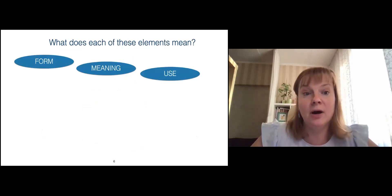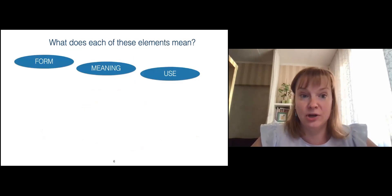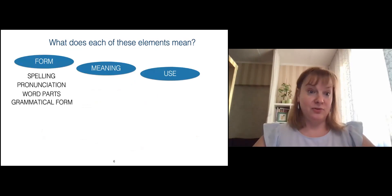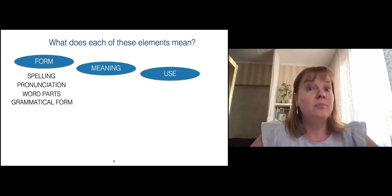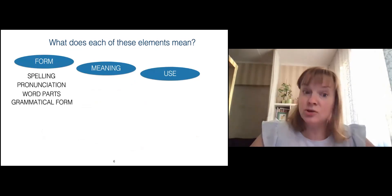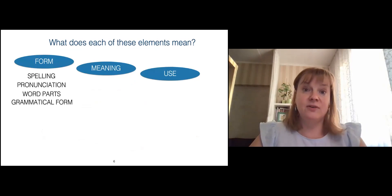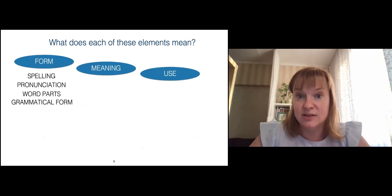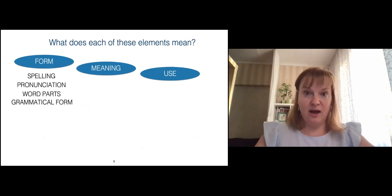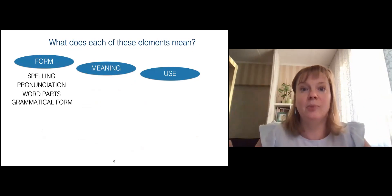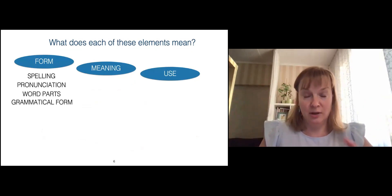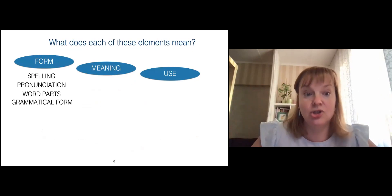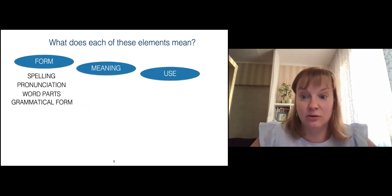When we speak about the form of the word, we mean both the graphical form — how the word is spelled — and its audio form — how we pronounce it. We also mean the parts of the word: prefixes, suffixes, endings, roots — everything that can help us change the word into different parts of speech. And certainly its grammatical form.